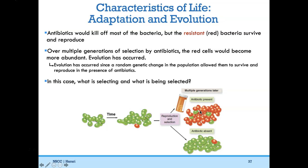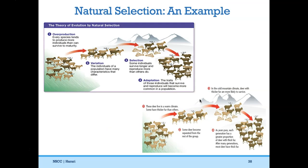In this case, the selecting agent is the antibiotic and it's selecting for antibiotic resistance. The theory of natural selection requires four qualifications: overproduction — all species tend to produce more individuals than can actually survive; variation — all individuals are different by chance because of mutations; selection — some individuals survive longer and reproduce more efficiently than others; and adaptation — the traits of individuals that survive and reproduce become more common in the population. That's evolution.